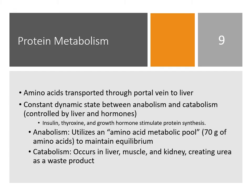For protein metabolism, amino acids broken down in the small intestine are transported to the liver via the portal vein, just like carbohydrates. There is a constant dynamic state between anabolism and catabolism, controlled by the liver and hormones — specifically insulin, thyroxine, and growth hormone. Growth hormone stimulates protein synthesis. These three hormones will either promote or retard protein synthesis.